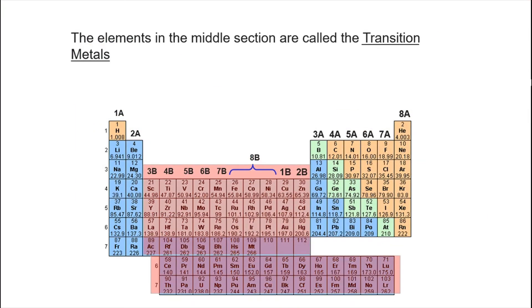The elements in the middle section are called the transition metals. Some of these, as you can see in rows 6 and 7, they're kind of offset. They're put in a separate section all by themselves. We'll talk about that in a moment.